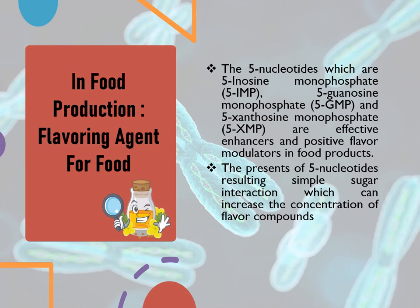Second, Nucleic Acid Metabolism is also used in food production as a flavoring agent. The 5' nucleotides — 5' Inosine Monophosphate (5' IMP), 5' Guanosine Monophosphate (5' GMP), and 5' Xanthosine Monophosphate (5' XMP) — are effective enhancers and positive flavor modulators in food products. The presence of these 5' nucleotides results in simple sugar interactions, which can increase the concentration of flavor compounds.